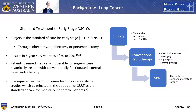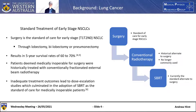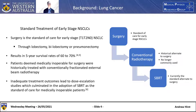The standard treatment of care for early stage non-small cell lung cancers is surgery — either through a lobectomy, bilobectomy, or pneumonectomy — resulting in five-year survival rates of around 60 to 70%. Some patients are deemed medically inoperable due to comorbidities like decreased lung function or a refusal of surgery. For these patients, they were historically treated with conventional radiotherapy; however, inadequate treatment outcomes led to dose escalation studies, which ultimately culminated in the adoption of SBRT as the standard of care for medically inoperable patients.